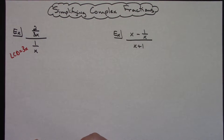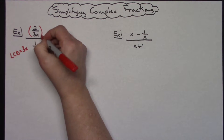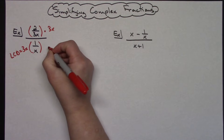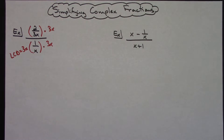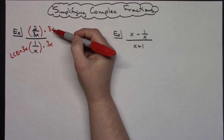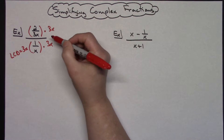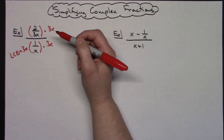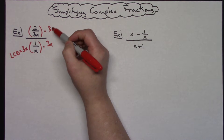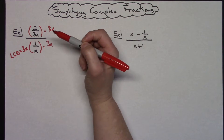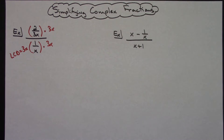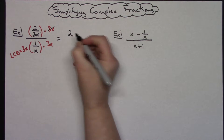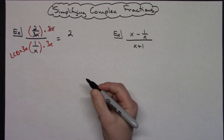Now what I want to do is multiply the numerator by 3x, and multiply the denominator by 3x. That makes it a very quick process. I usually just write 3x down on both of those. Now this 3x in the numerator and this 3x in the denominator are going to make them cross out. Those cross out and I'm left with a 2 in that numerator. It's simplified really, really easily.